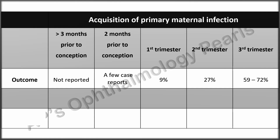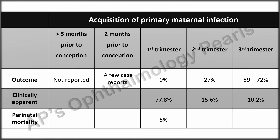The risk of transmission increases with gestational age of maternal infection. Earlier maternal seroconversion results in more clinically apparent disease in the fetus and can result in death and spontaneous abortion. Fetuses affected due to late maternal infection have more subclinical infection. Perinatal mortality is therefore greater in earlier acquired maternal infections.